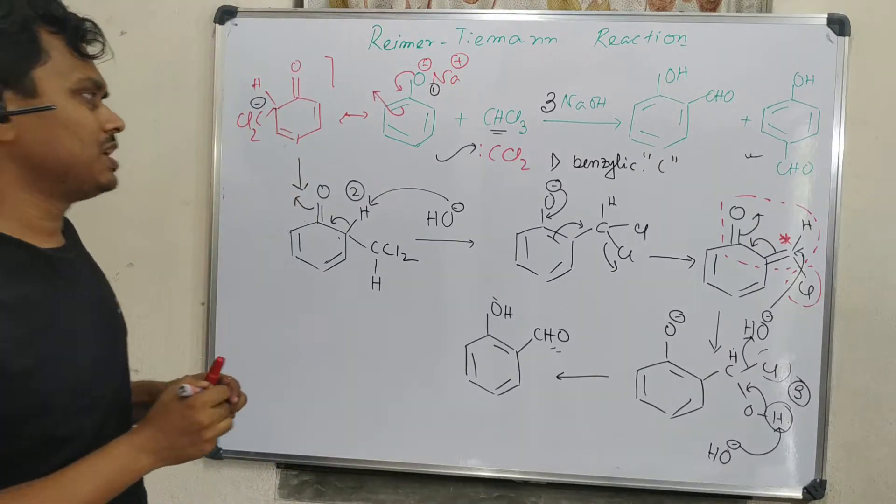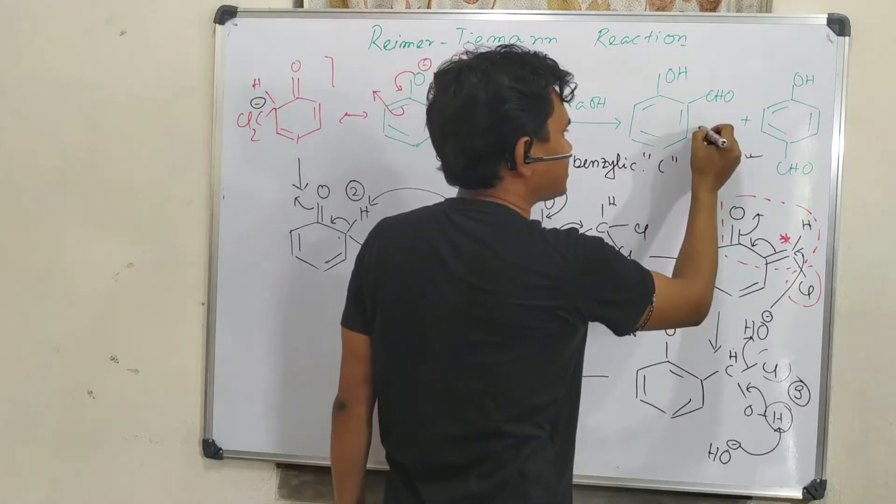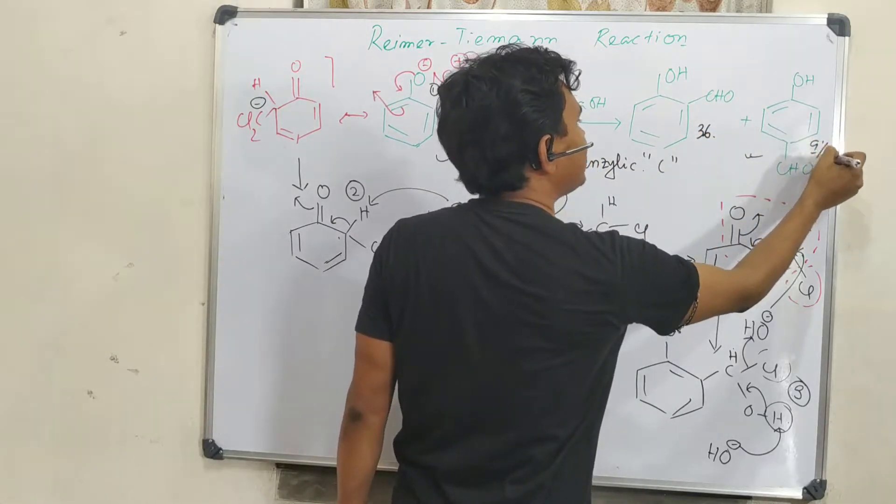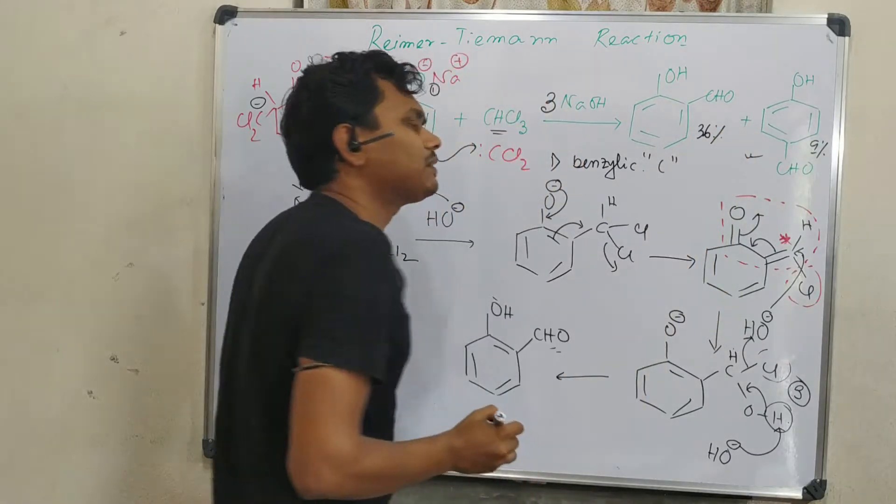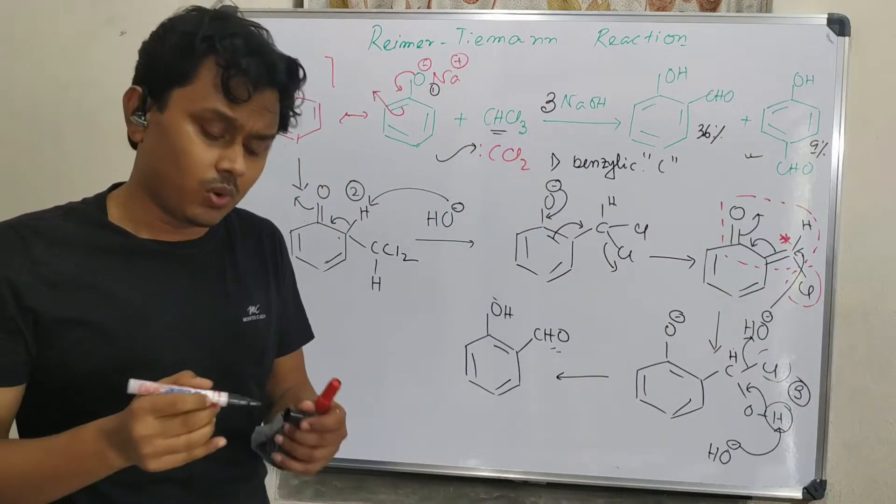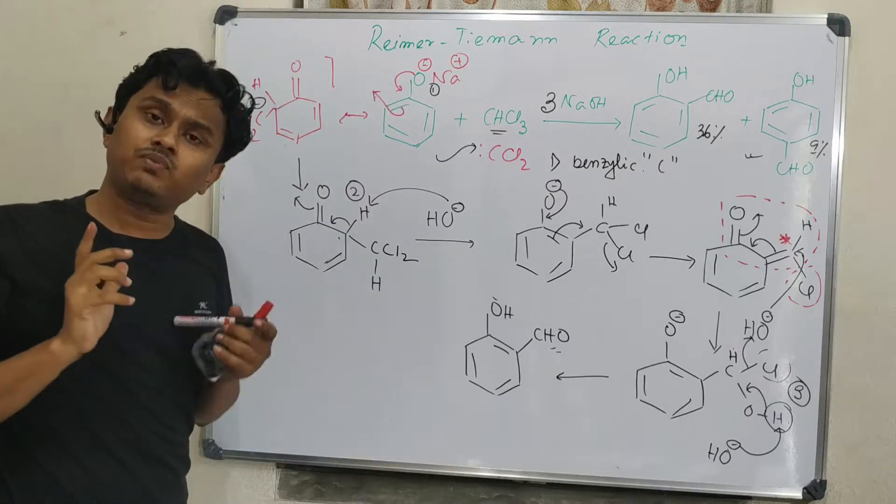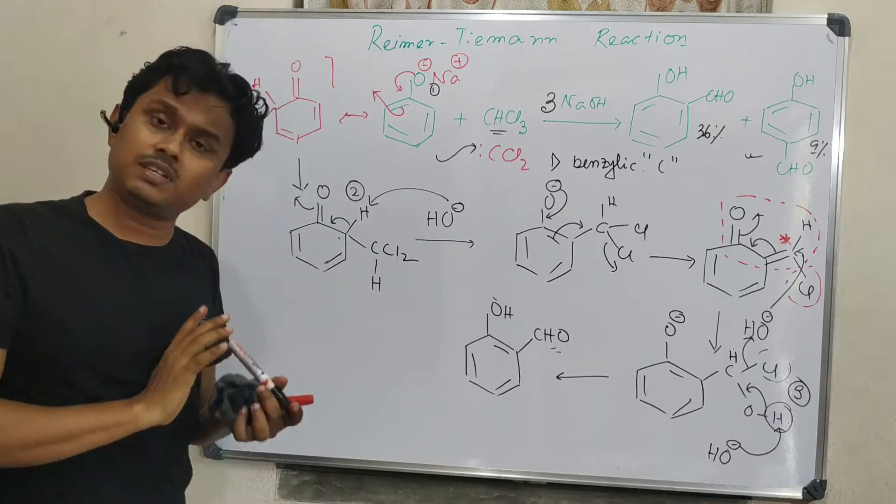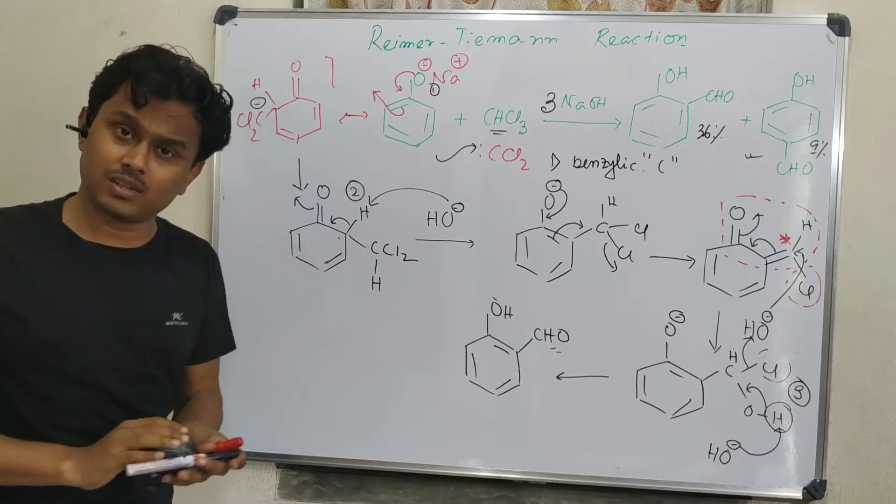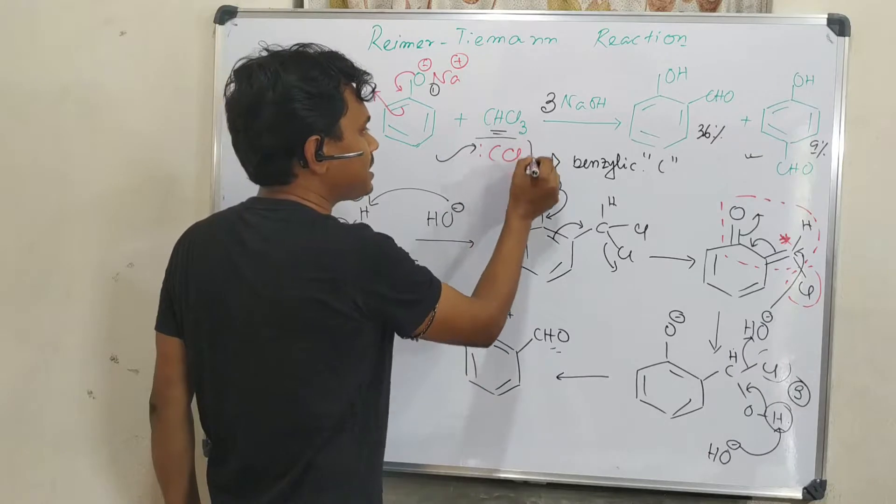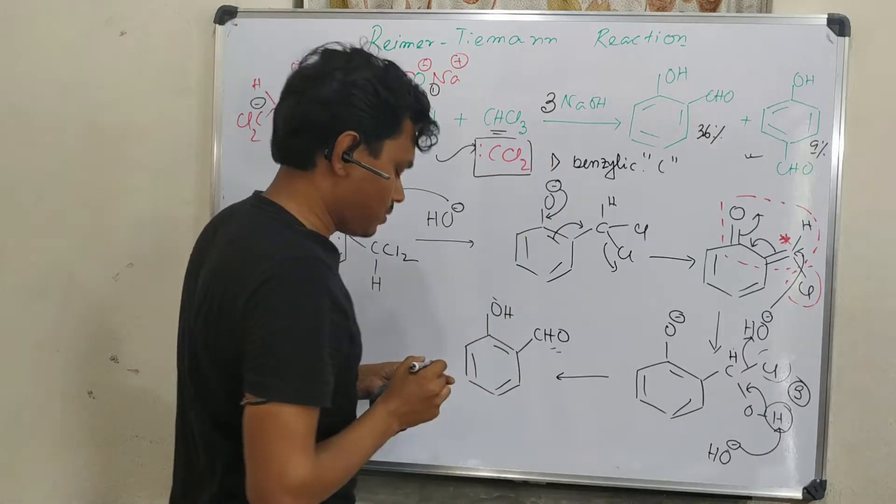Here the question comes: this ortho product is around 36% and para is around 9%. Why? Generally we have observed that para product predominates, not the ortho product. But there's an exception here. I do not have the actual answer for this. One of my opinions is that this dichlorocarbene is an electron-deficient species. That means it needs electrons.